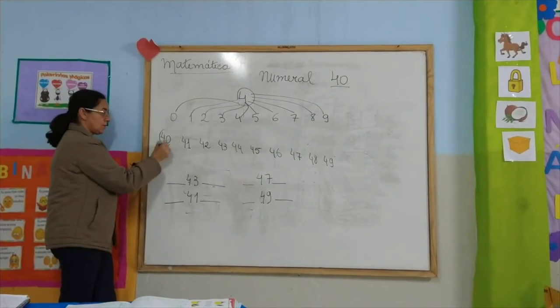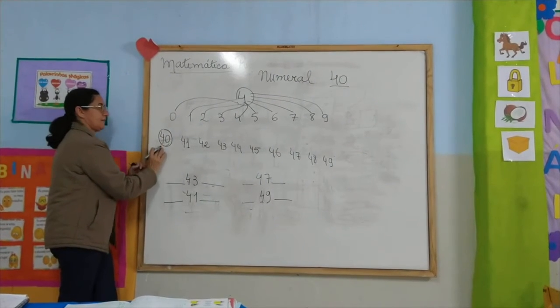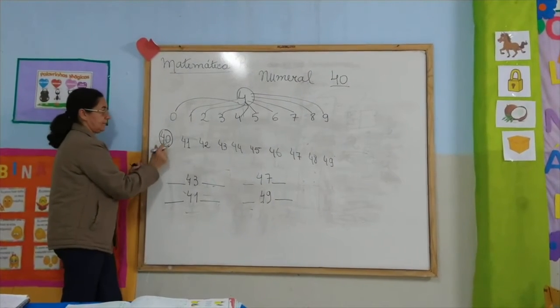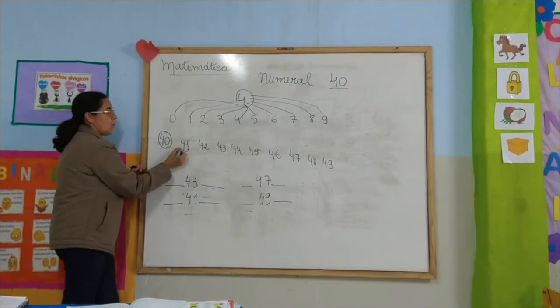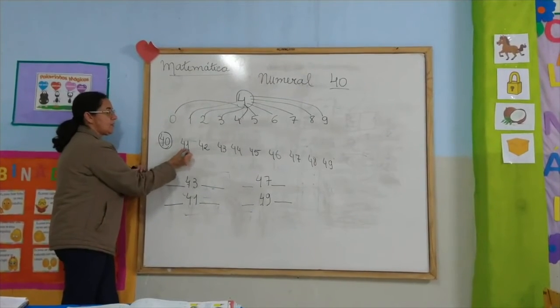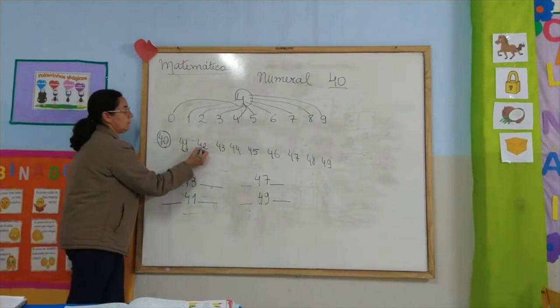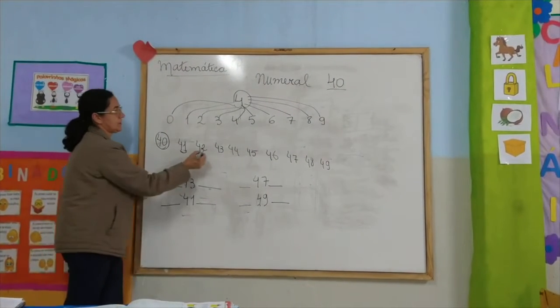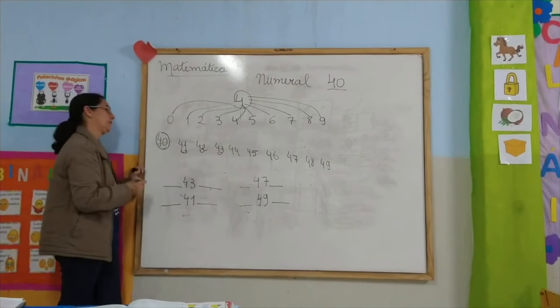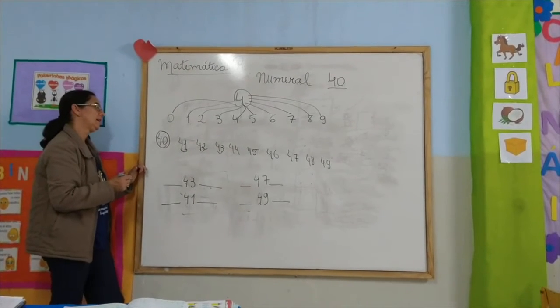40 and 1 is 41. 40 and 2 is 42. 40 and 3 is 43.